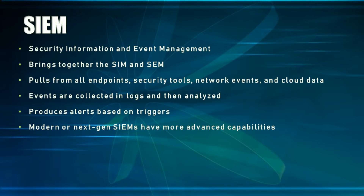A SIEM stands for Security Information and Event Management and is one of the most traditional but important security tools in a network that helps security professionals identify an event that happens in the environment. A SIEM combines Security Information Management and Security Event Management. It will pull from all endpoints, security tools, network events, and sometimes cloud data. This is about visibility and allows the security team to see everything going on through a single tool. An event is anything that occurs within a network, but not all events are necessarily bad or considered alerts. Events are collected in the form of logs and organized into something meaningful, then analyzed and escalated into an alert based on a rule set and triggers. When an event hits a specific threshold, an alert is created, telling the security team that something needs to be investigated to determine whether it's a legitimate cause for concern. Not all SIEMs are the same — modern or next-gen SIEMs also have advanced threat detection that traditional SIEMs don't have, and they operate closer to a SOAR tool, which we'll discuss later.